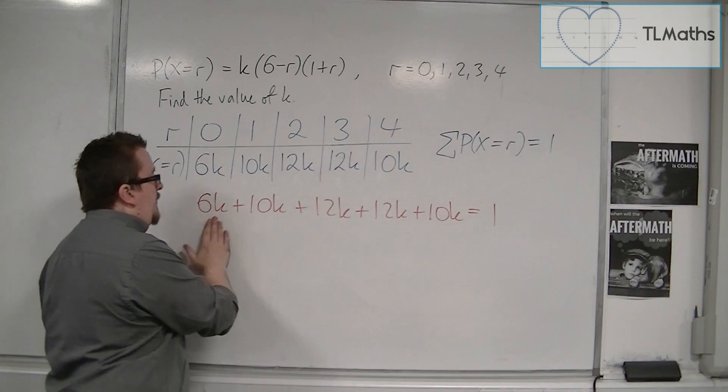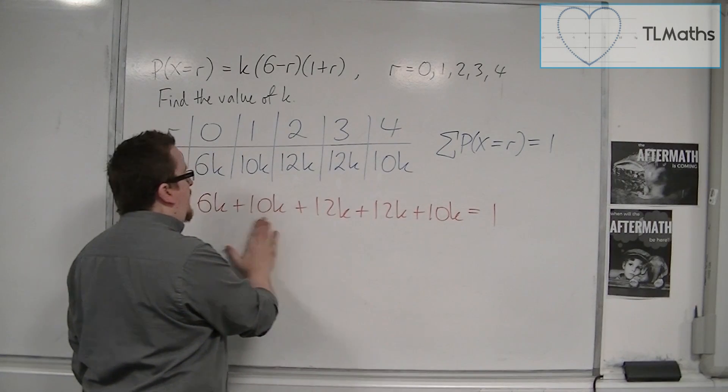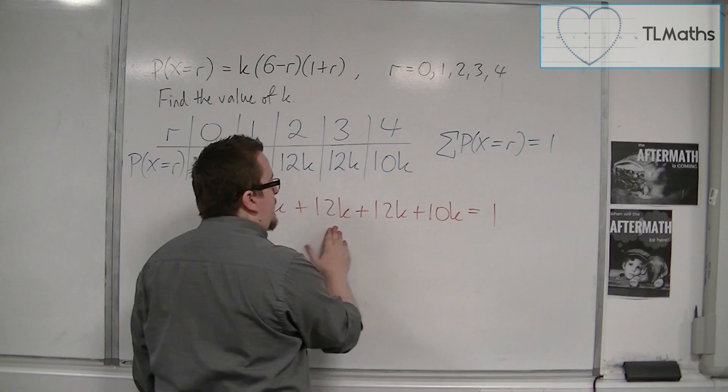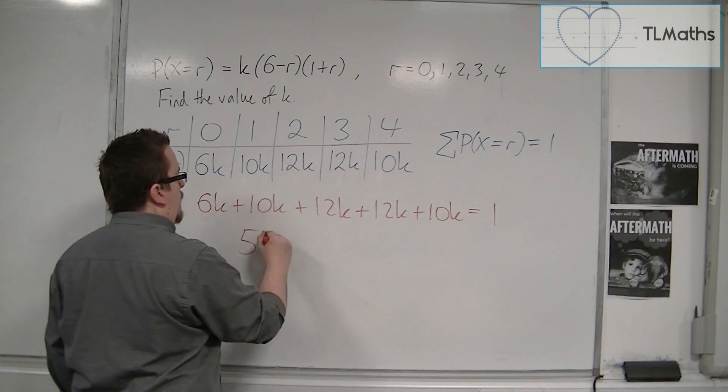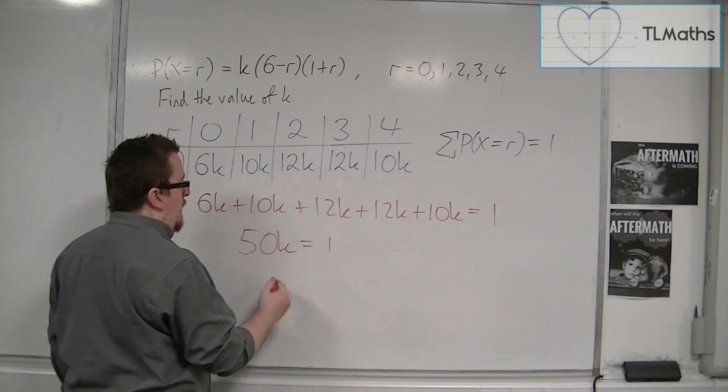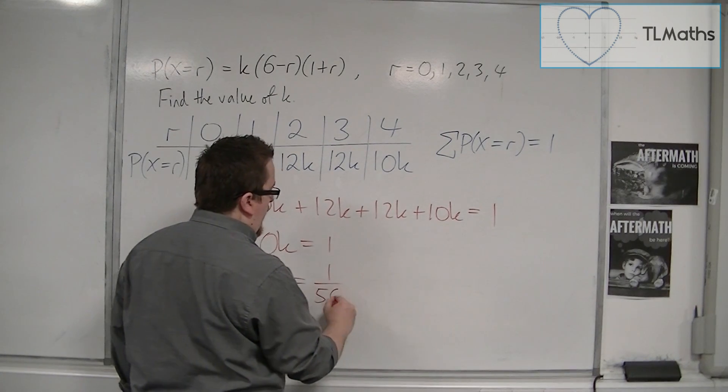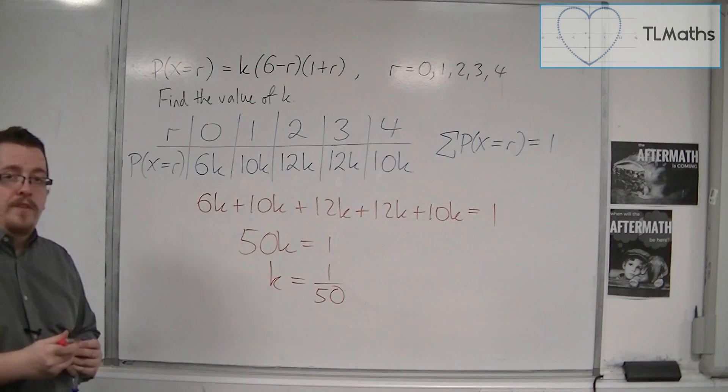So 6, 10, that's 16, 28, 40, 50k must be equal to 1. And then divide both sides by 50, and so k must be 1 over 50.